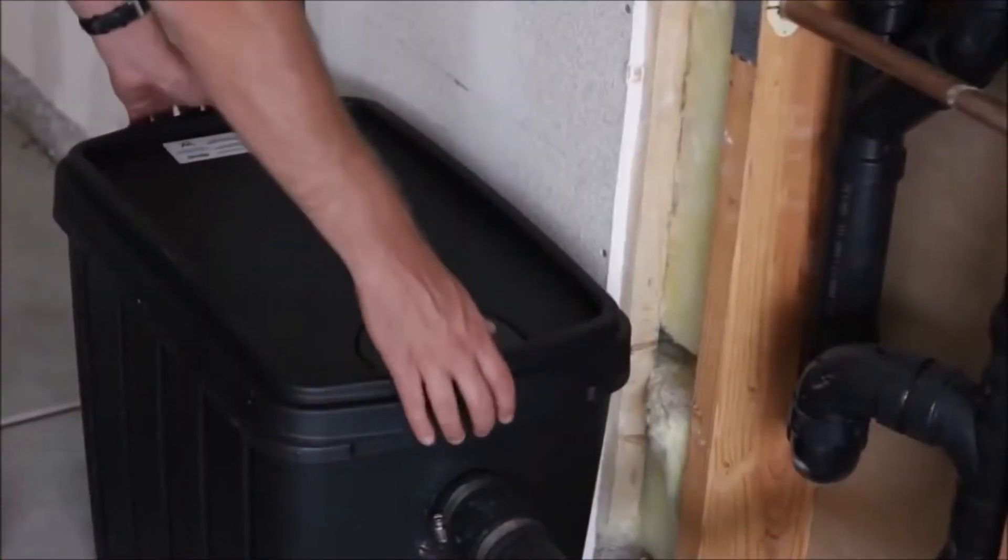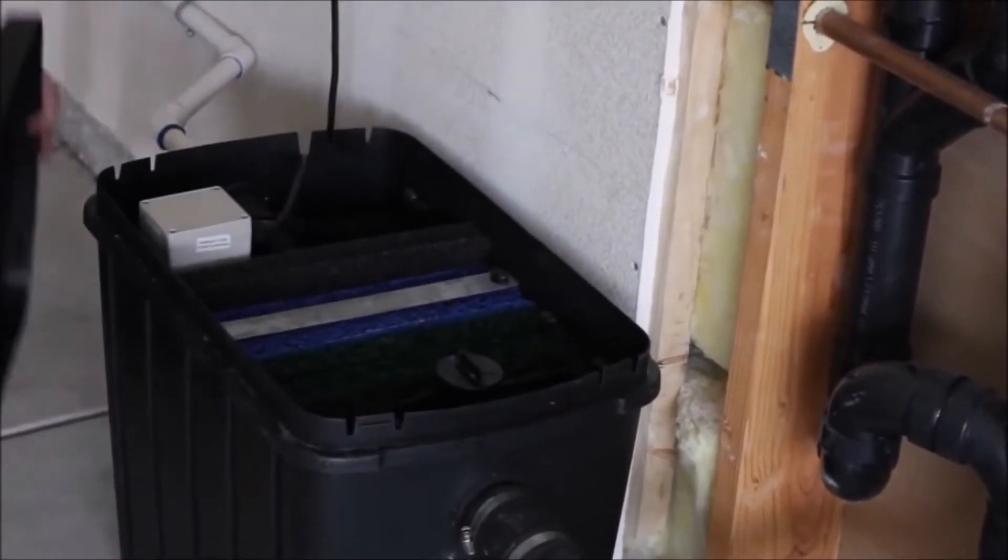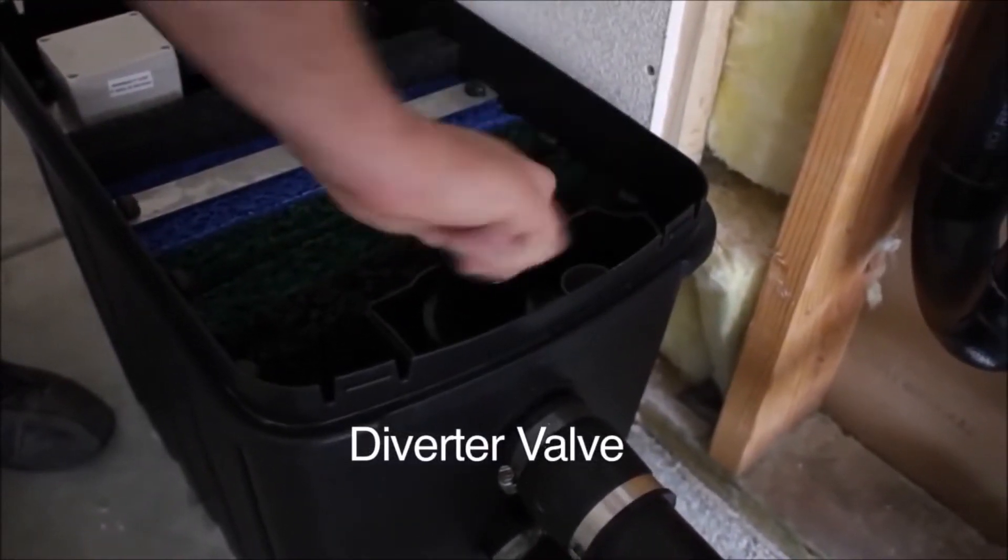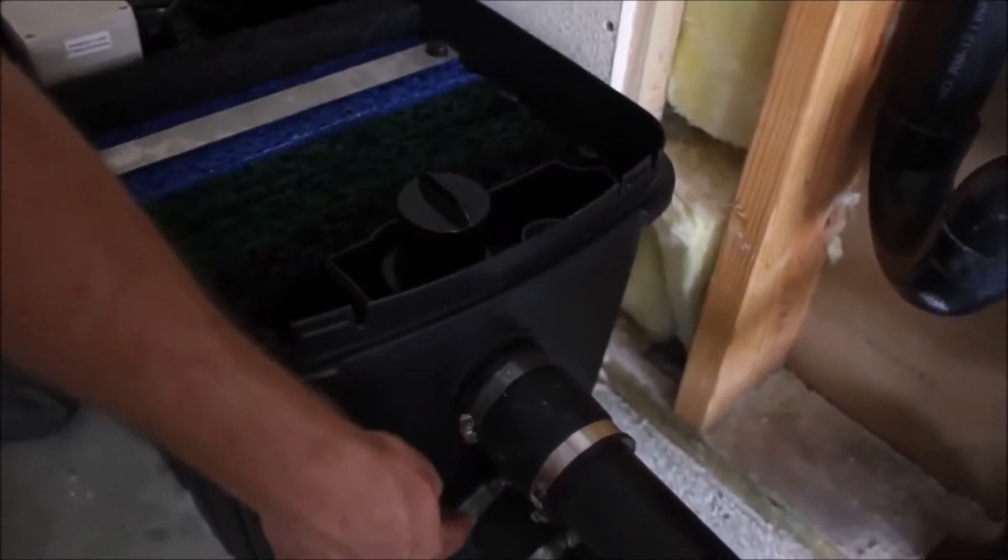Let's take a look inside this unit. The Aqua2Use has a built-in three-way diverter valve. It allows you to send greywater to the Aqua2Use or divert the greywater back to the sewer.